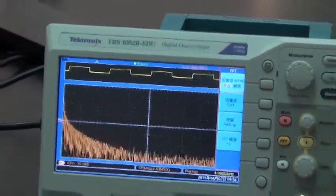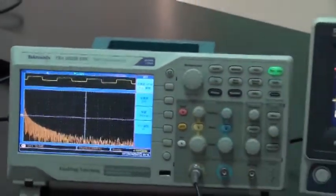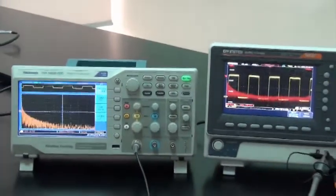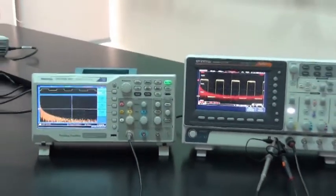Now, adjust frequency scale to 5kHz per division for GDS-1000B and TBS-1000EDU.